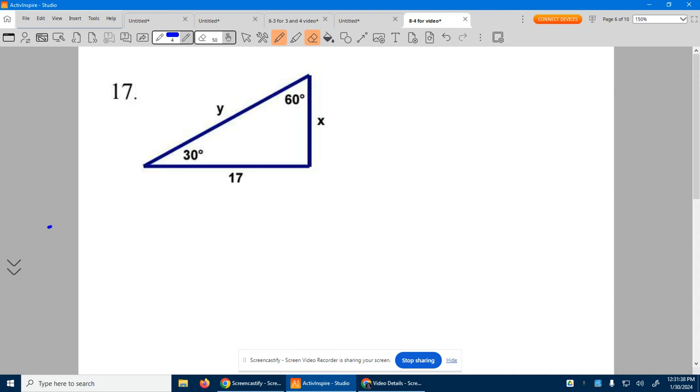Number 17, it is a 30-60-90. So in a 30-60-90, here's your 30, here's your 60, which forces that to be a right angle of 90.